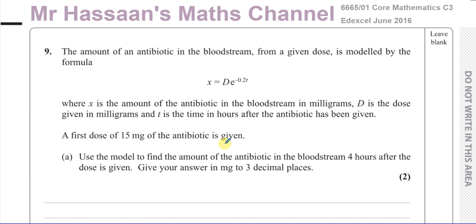Here we have a mathematical model showing the amount of antibiotic in the bloodstream after a dose has been given. The amount of antibiotic from a given dose is modelled by the formula x = d·e^(−0.2t). We can see this is a decay — as time goes on, the amount of antibiotic in the bloodstream goes down. x is the amount in milligrams, d is the dose given in milligrams, and t is the time in hours after the antibiotic has been given.